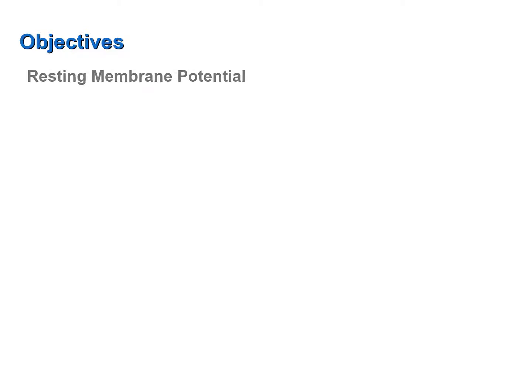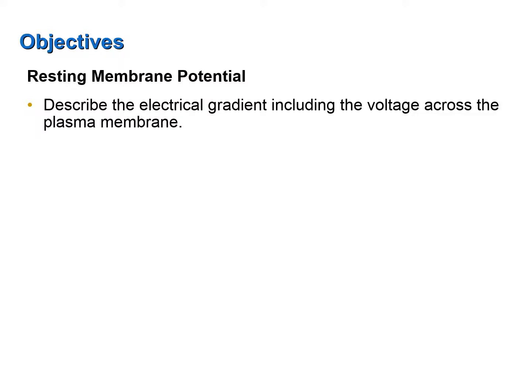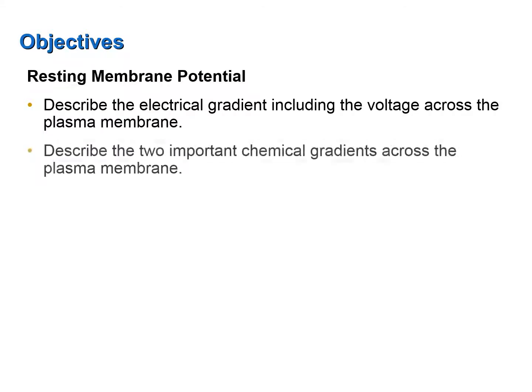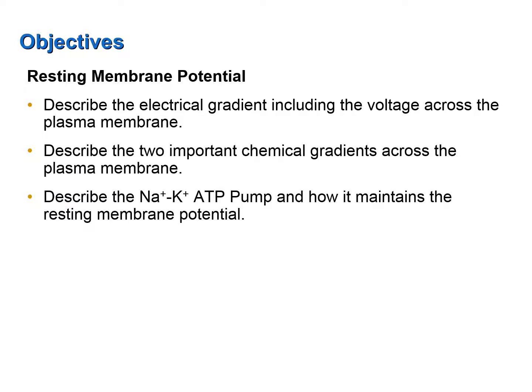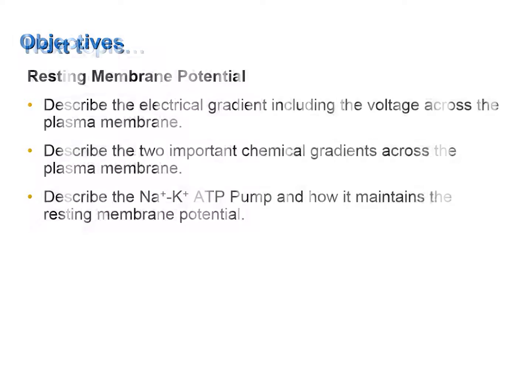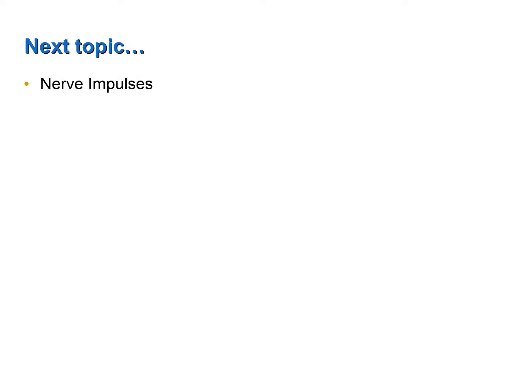Let's now review the objectives of this screencast. For the resting membrane potential: describe the electrical gradient, including the voltage across the plasma membrane; describe the two important chemical gradients across the plasma membrane; and describe the sodium-potassium ATP pump and how it maintains the resting membrane potential. The next screencast will discuss nerve impulses.